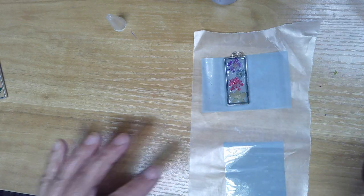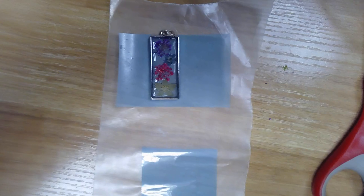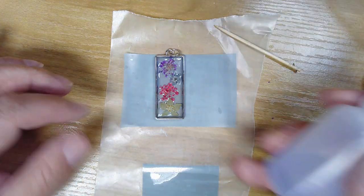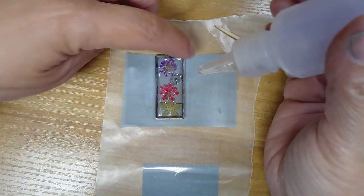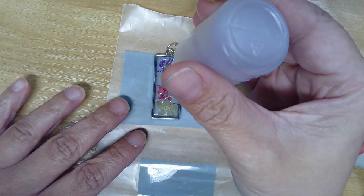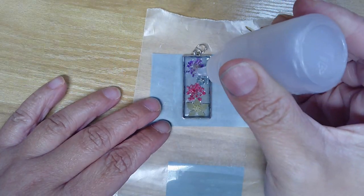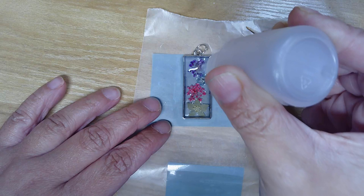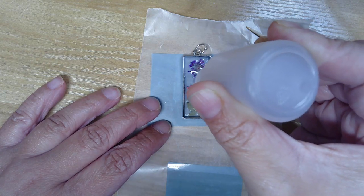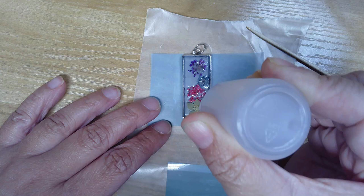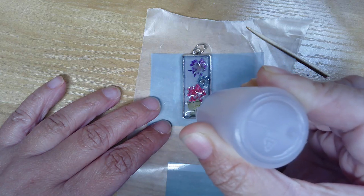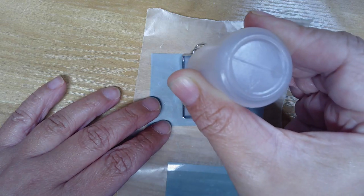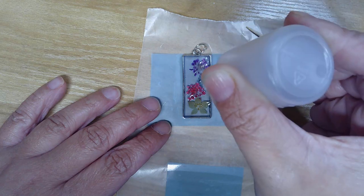Once you've got everything arranged, I'm going to fill the rest of this with resin. I'm just going to make sure that all of the flowers are covered and fill this up. If your flowers move around and start floating, you can use your toothpick to kind of push them back down.